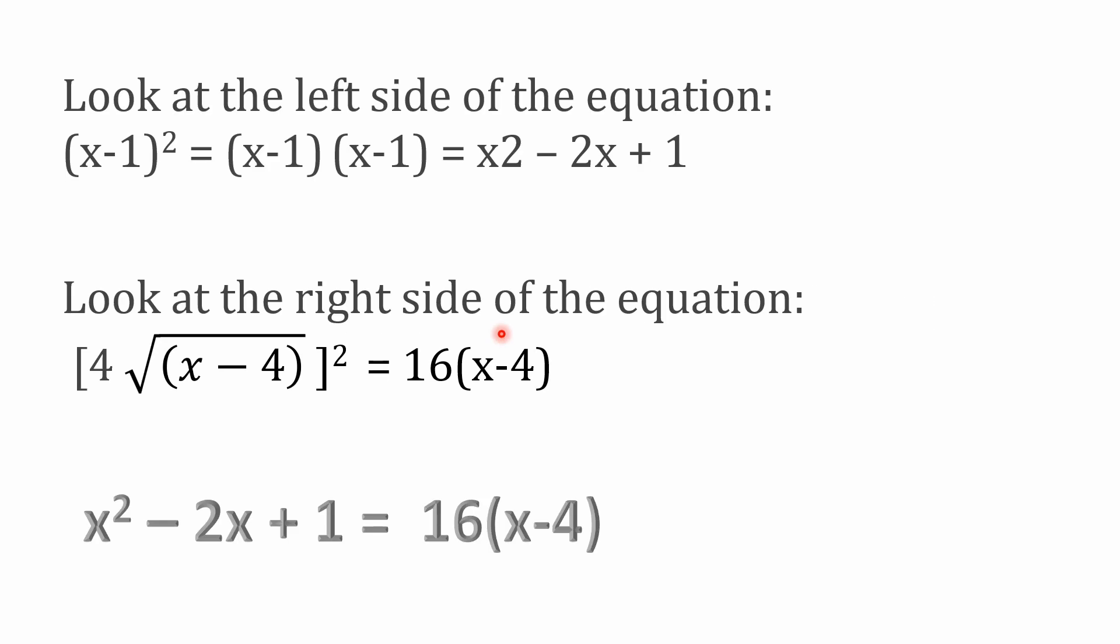So if we first look at the left side of the equation, where we have the quantity x minus 1 squared, well, we know that's x minus 1 times x minus 1. And if you go ahead and multiply that all out, that becomes x squared minus 2x plus 1.